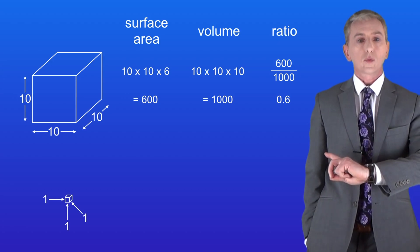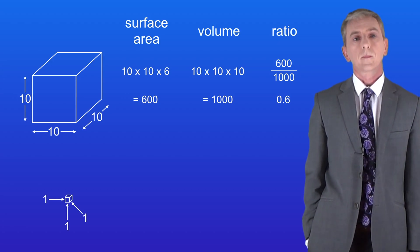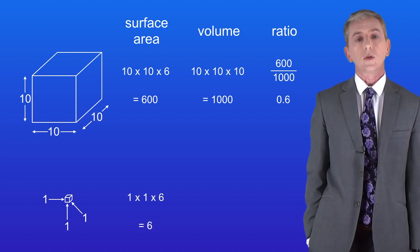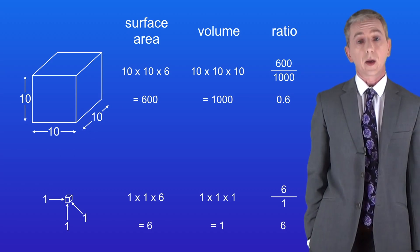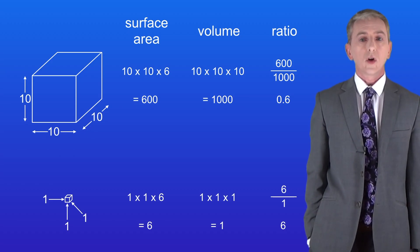Here's another particle, but this one has sides of only one unit. The surface area of this particle is six units, but the volume is only one unit. Dividing six by one gives us a surface area to volume ratio of six.